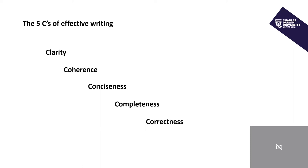The final C of the five C's of effective writing refers to correctness. At university there are two types of correctness. One could be considered the factual correctness of the content that you include, and of course that would refer also to the use of citations to ensure that they are accurate.